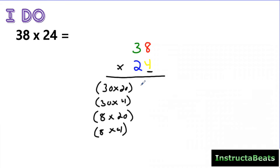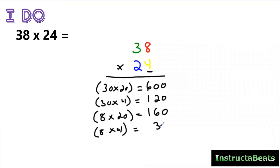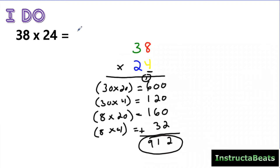Just like we split the array into 4 different smaller arrays, we're doing the same thing here. You can go back and see the visual model if it helps. We just need to solve how much we have in each of these smaller arrays. I have 30 times 20 — that's 600. 30 times 4 — that's 120. 8 times 20 — that's 160. And 8 times 4 — that's 32. These are all my partial products, so I add them back together. My place values are lined up nicely, and my product of 38 times 24 is 912.